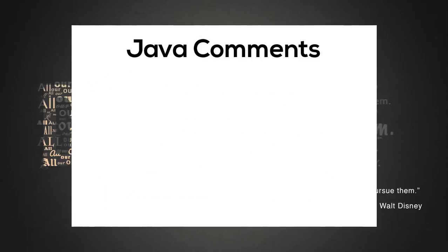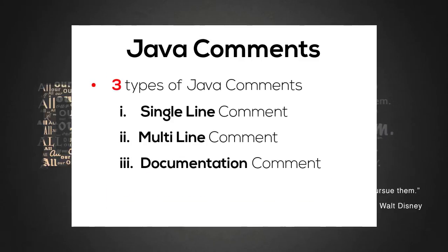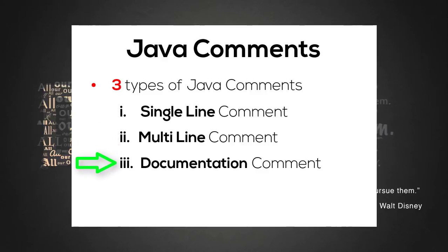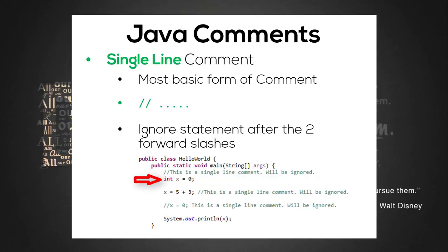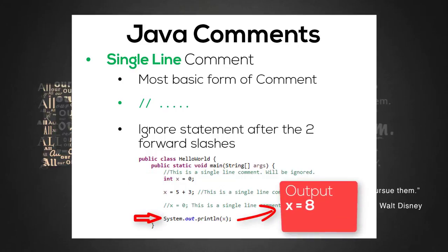There are basically three different types of Java comments, which include single-line comments, multi-line comments, and documentation comments. The single-line comment is the most basic form available in Java. All you need to do is hit the slash key twice, and the compiler will ignore everything after the two forward slashes up to the end of the line.